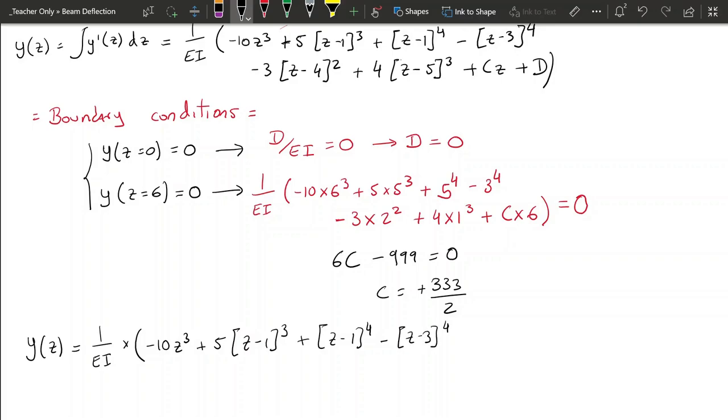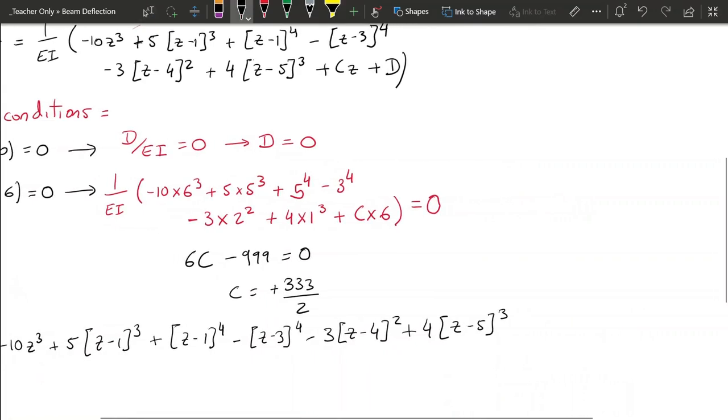z minus 1 cubed plus z minus 1 to the power of 4 minus z minus 3 also to the power of 4 minus 3, z minus 4 squared plus 4, z minus 5 cubed, and then finally we can replace C with plus 333 over 2 times z.